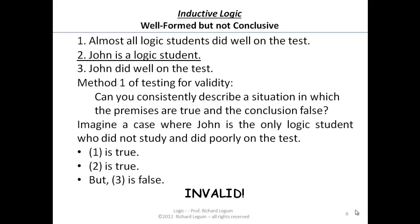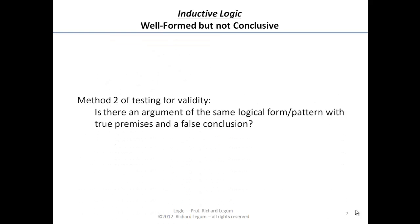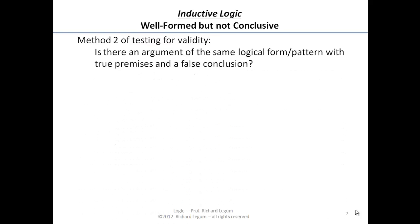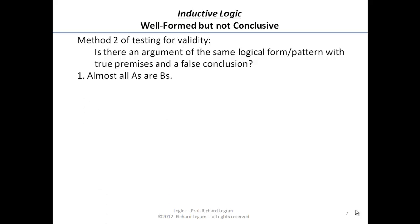Now, just to remind ourselves that there's another way of proving invalidity, let's take a look at method two. Is there an argument of the same logical form or pattern with true premises and a false conclusion? First of all, let's see what the pattern is. It looks like: almost all A's are B's. X is an A. Therefore, X is a B.